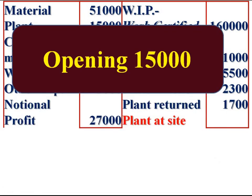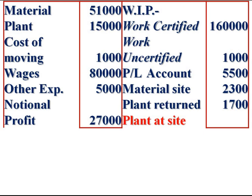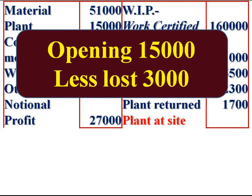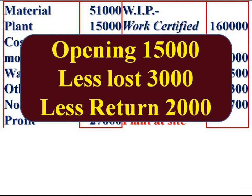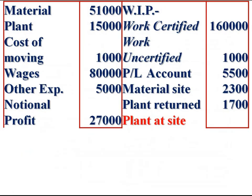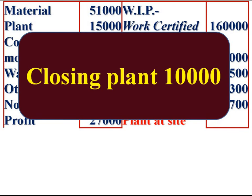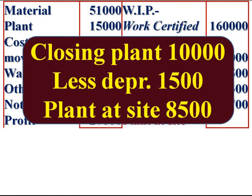Now we compute closing plant at site. Opening plant is Rs 15,000. Plant costing Rs 3,000 was lost, and plant costing Rs 2,000 was returned. So closing plant equals 15,000 minus 3,000 minus 2,000, which equals Rs 10,000. Depreciation at 15% on Rs 10,000 equals Rs 1,500. Therefore, plant at site after depreciation is Rs 8,500, which is to be credited.